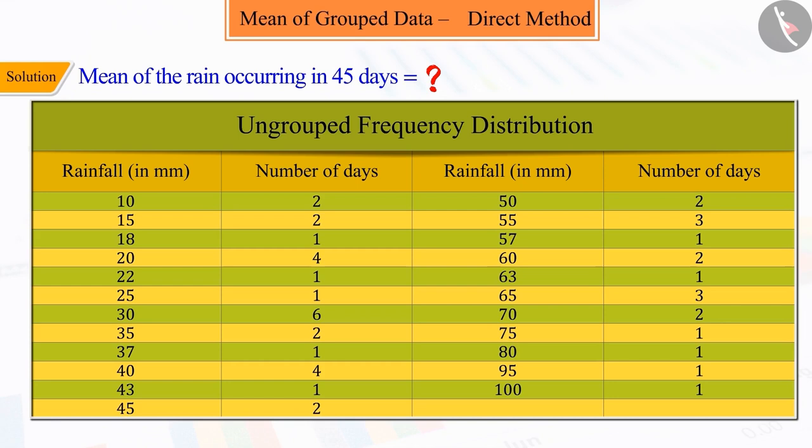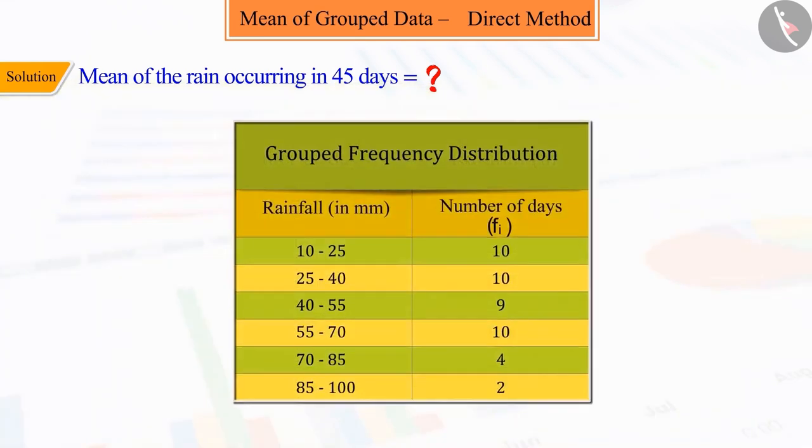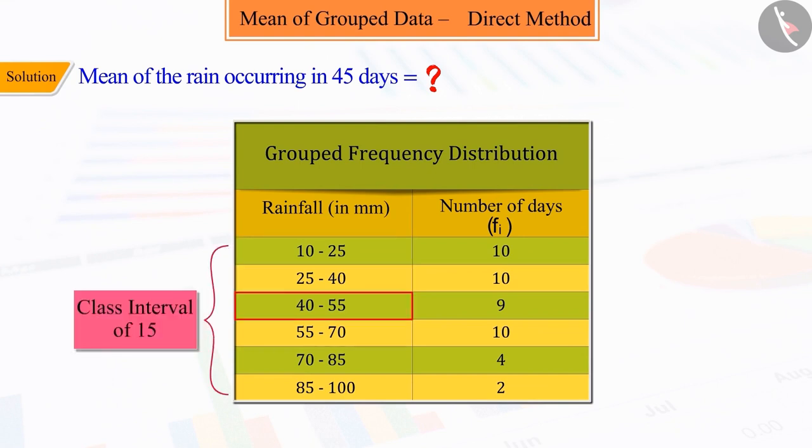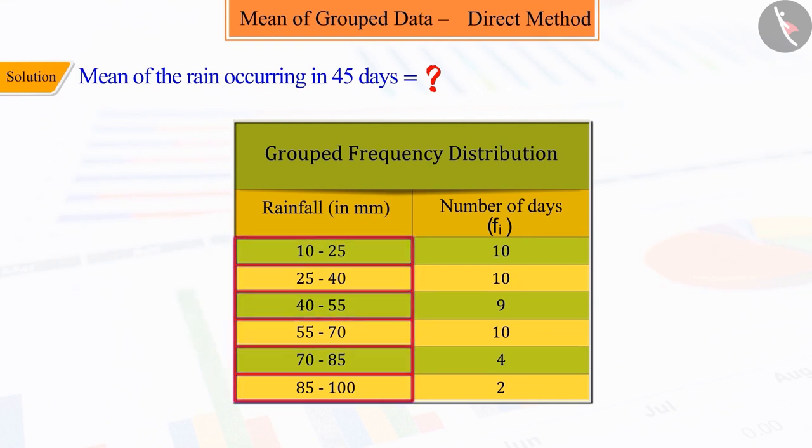Therefore, to understand this data easily, we will classify this ungrouped data into groups by making a class interval of 15 and specify the frequencies of the class intervals, that is fi, which is shown in the following table.